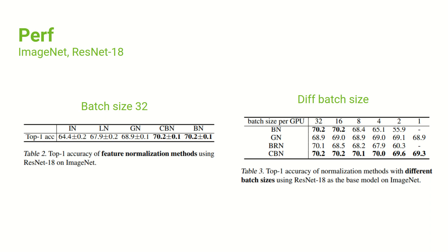In the most extreme case — batch size equal to one — group norm actually shines here because it crosses the channel domain. But Cross-Iteration Batch Normalization still performs very well. Thinking of it physically, Cross-Iteration Batch Normalization is a superset of batch normalization, because it contains information from different time domains including the current time, which is what batch normalization covers. So CBN performance is obviously a superset of BN performance across different circumstances.